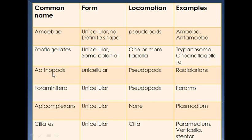Actinopods are called so because 'actino' means ray and 'pods' means feet — their pseudopodia are ray-like, just like sun rays. Foraminifers are shelled protozoa. Apicomplexans include Plasmodium; they are unicellular, and their spores have an apical complex which helps in penetration into the body of the host. Ciliates are animal-like protists that are members of protozoa and have cilia as their locomotory structures.